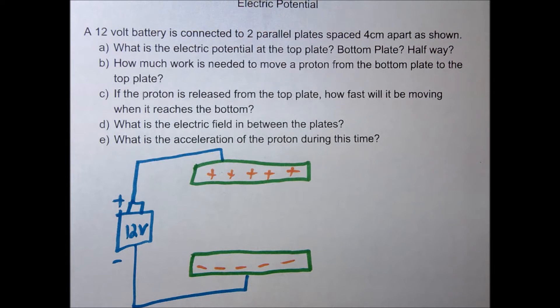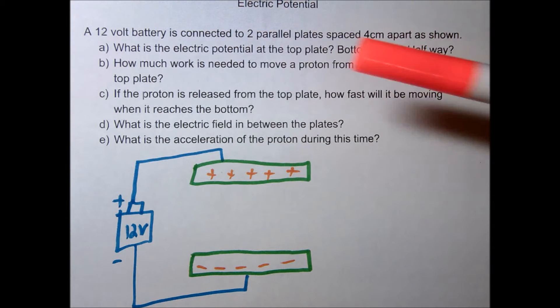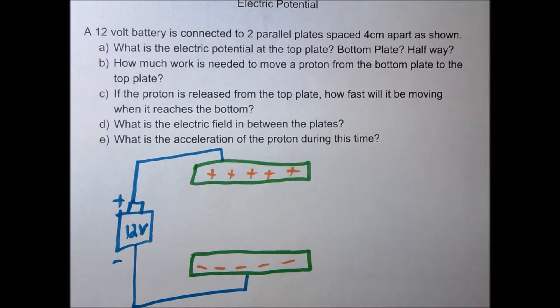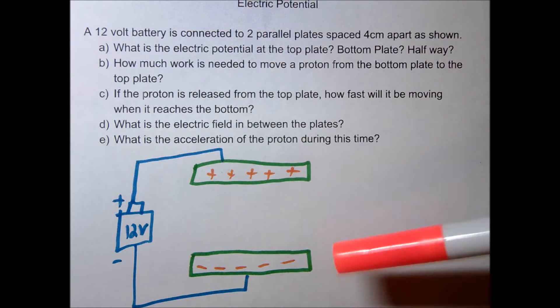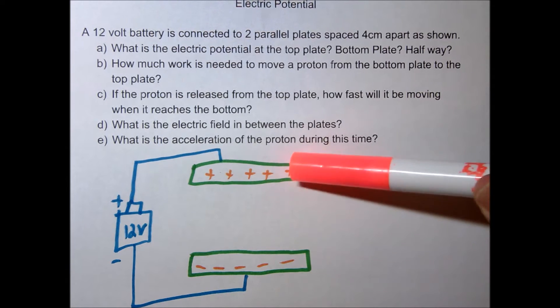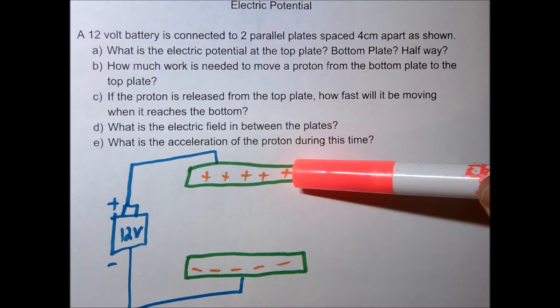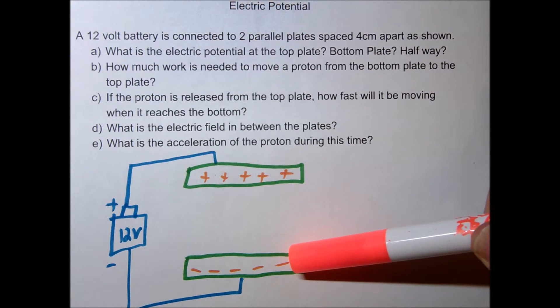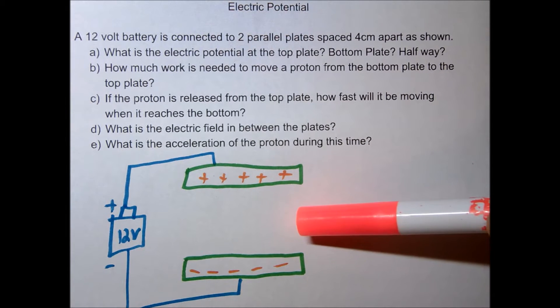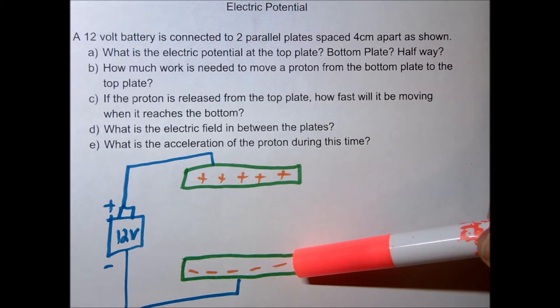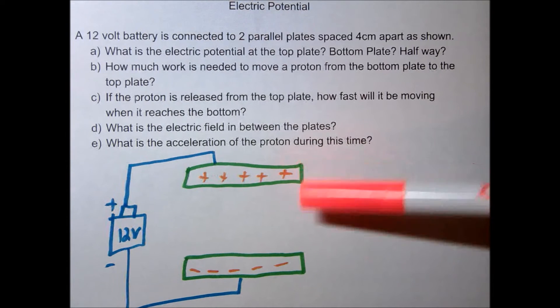The first question is what is the electric potential at the top plate? And actually this is not a great question at this point because you have to define what your zero potential point is. Just like when we talked about gravity, gravitational potential, we said the ground was our zero joule state or the bottom was our zero joule state. For example, if we call this the zero volt state, then up here we would say the potential is 12 volts at the top. However, if I define this as my zero volt place, then down here this would be negative 12 volts.